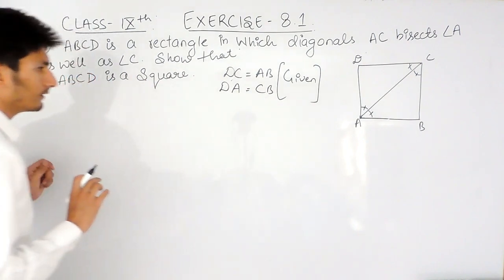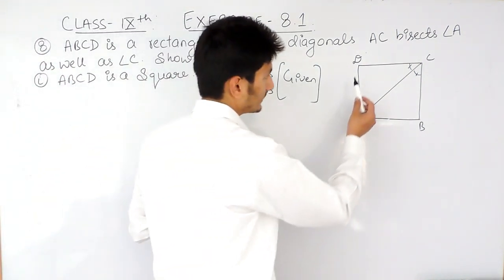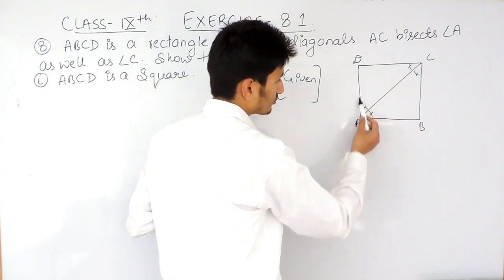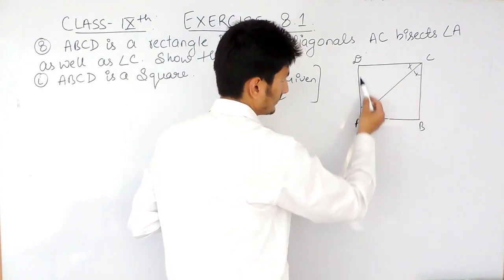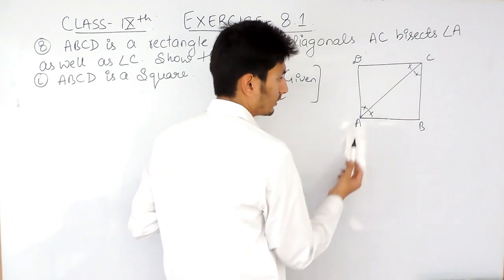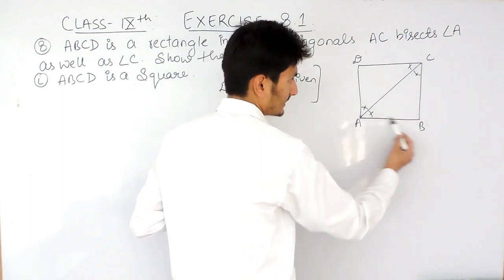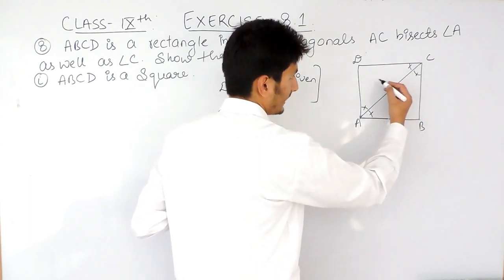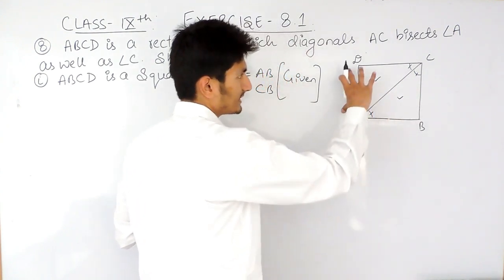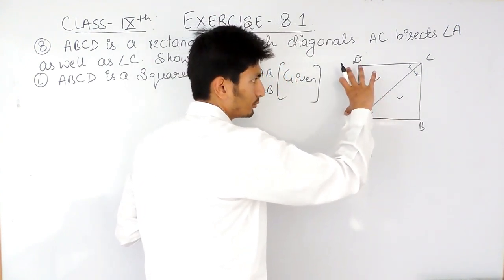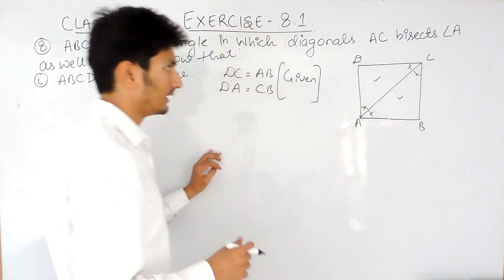To do that, you have to prove that triangle ADC is congruent to triangle ABC. If these two triangles are congruent, then obviously by CPCT we will be able to prove that this side is equal to this side.